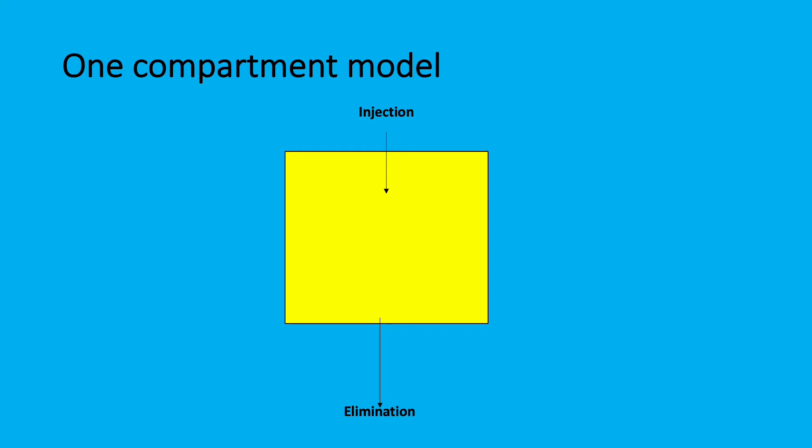One compartment is the most simple form. You give the drug into the compartment, a volume. The drug fills the volume and then is eliminated over a period of time.